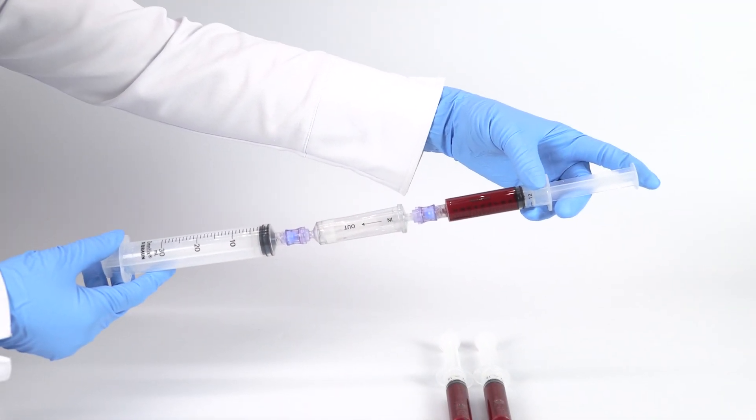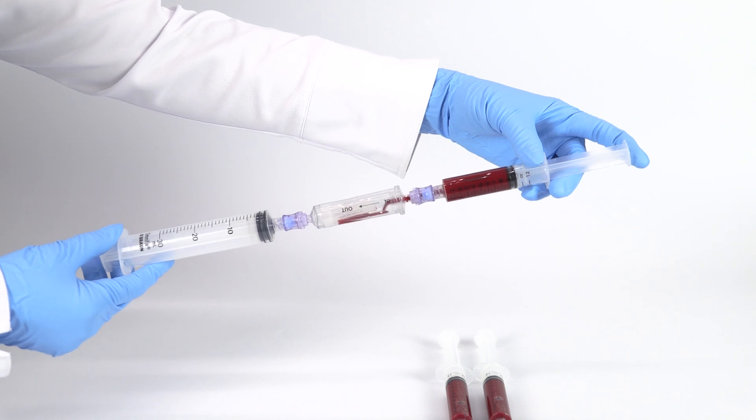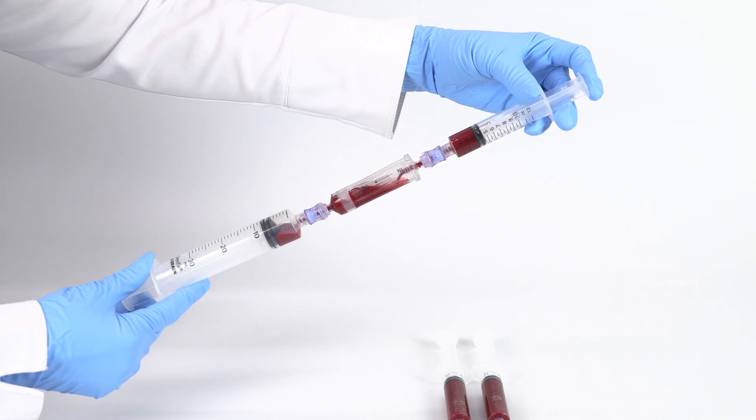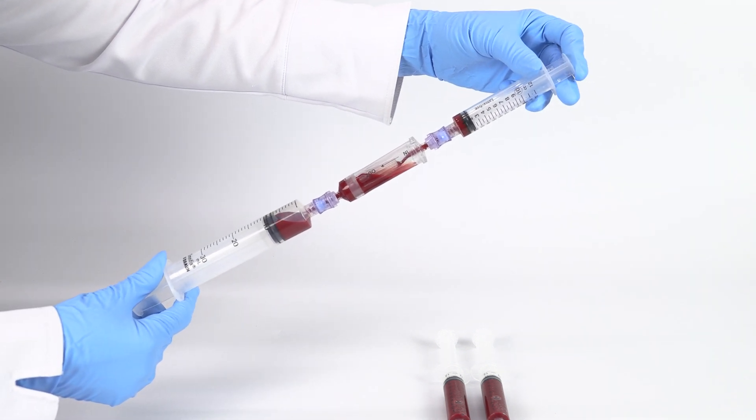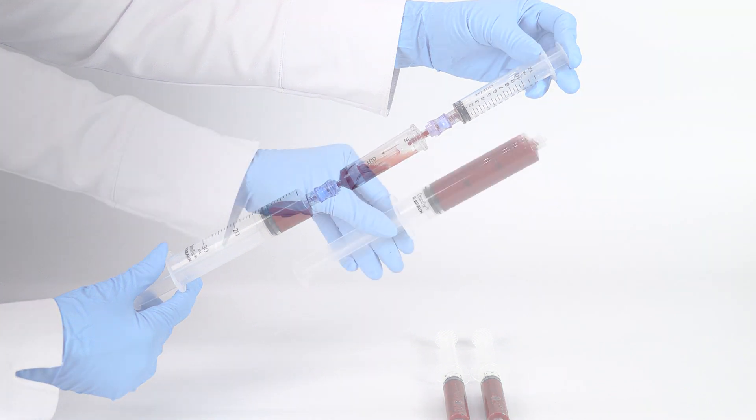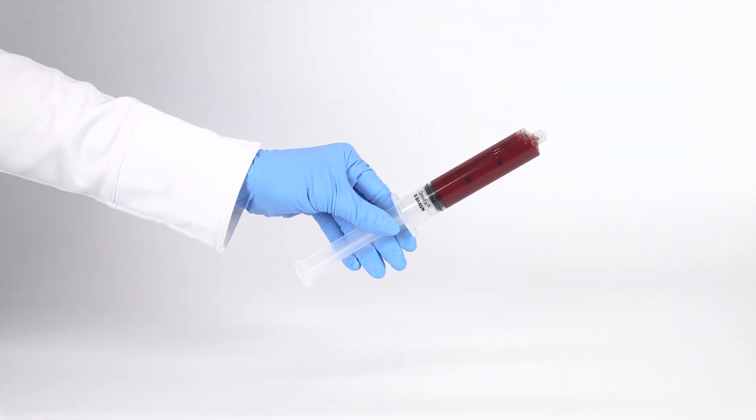Connect each 12-milliliter bone marrow syringe to the in-port of the bone marrow filter. Then connect a 30-milliliter syringe to the out-port of the filter. Filter by injecting the bone marrow from each 12-milliliter syringe through the filter into the 30-milliliter syringe.